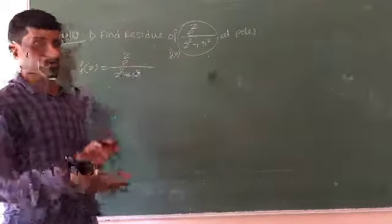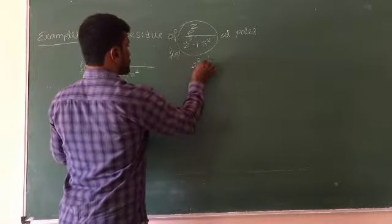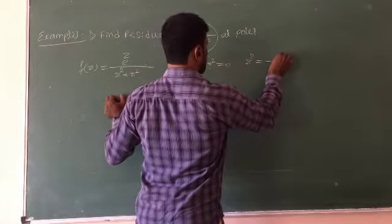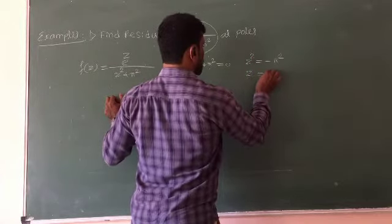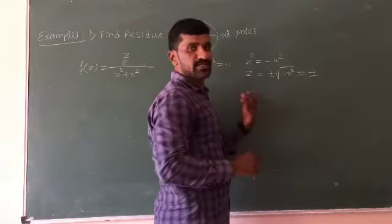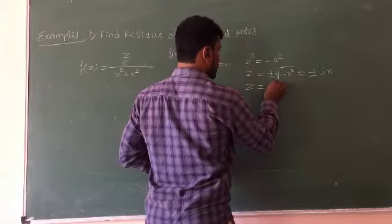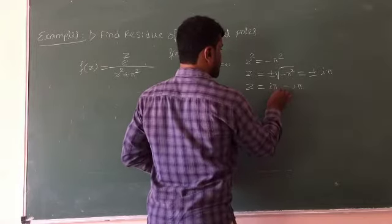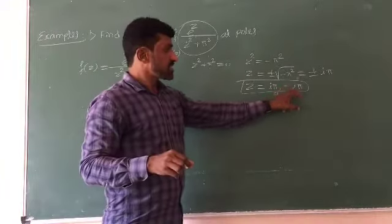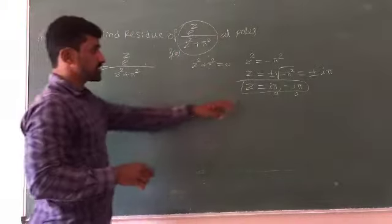To find the poles, set the denominator equal to zero: z squared plus pi squared equals zero. Therefore z squared equals minus pi squared, so z equals plus or minus the square root of negative pi squared. Since the square root of negative one is imaginary, z equals plus i pi or minus i pi.